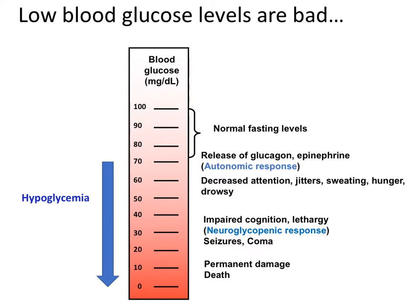Our brains need glucose in order to function properly, and therefore low blood glucose, or hypoglycemia, is very dangerous. If the levels of glucose in our blood drop below about 70 mg per deciliter, we start feeling signs of jitteriness, feeling hangry, sweating, and those are associated with release of epinephrine or an autonomic response. If levels of glucose continue to drop even lower, then our brain starts being starved for glucose, and we have what's called a neuroglycopenic response, and that can be very serious, resulting in seizures, coma, and eventually death.